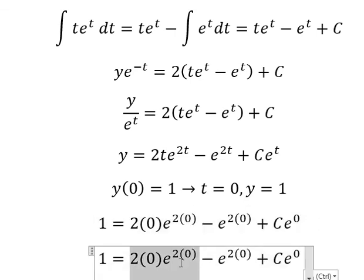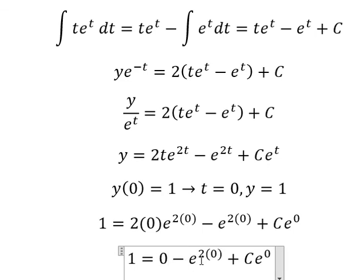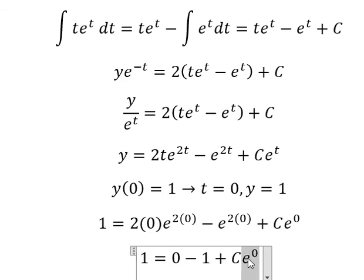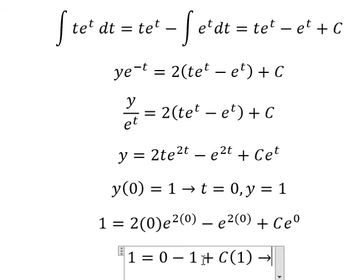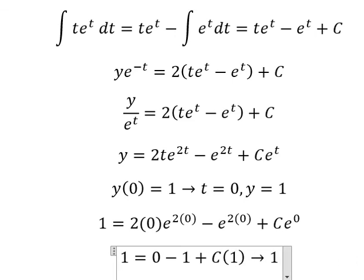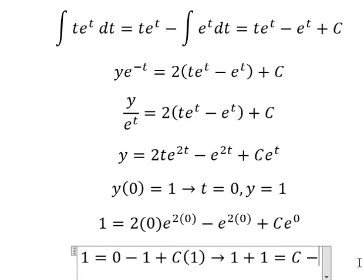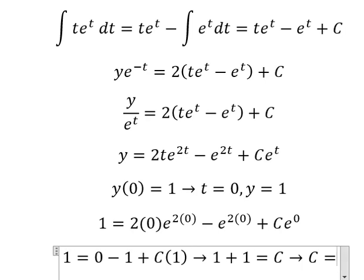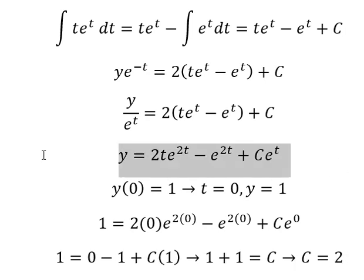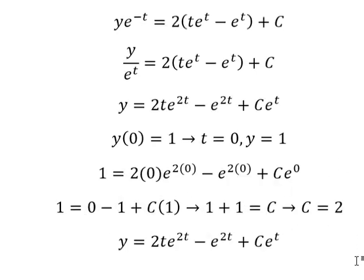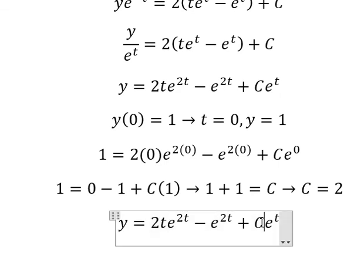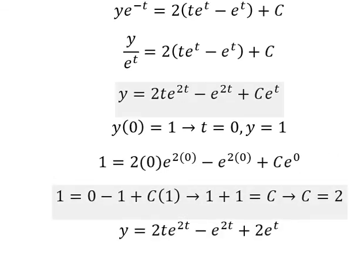This gives us 0 on one side, 1 and 1 on the other, and negative 1 moves to the left side. So we get C equals 2. We substitute 2 back into our equation. That is the end — thank you for watching.